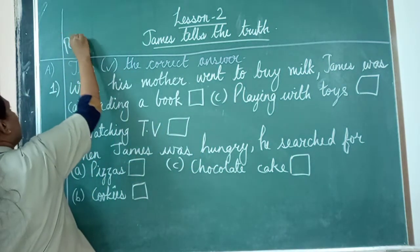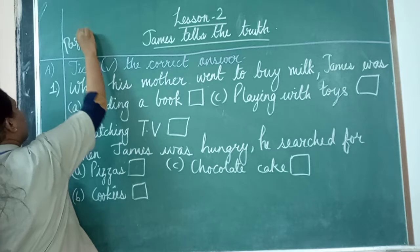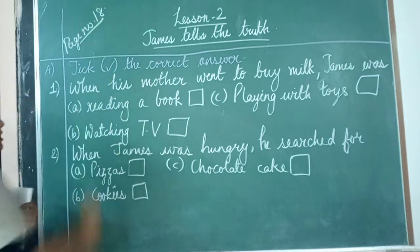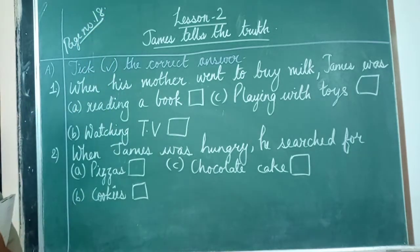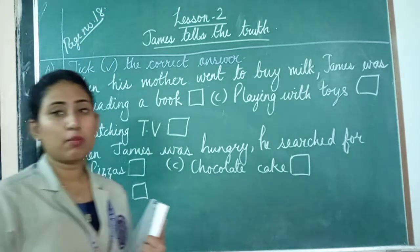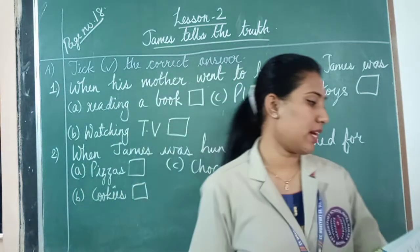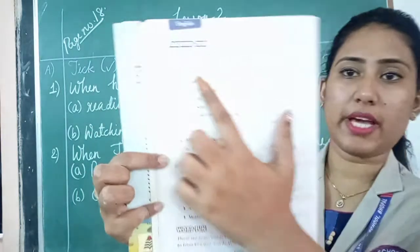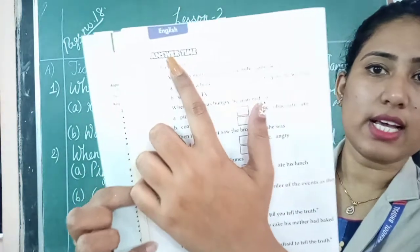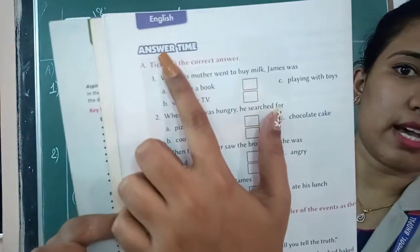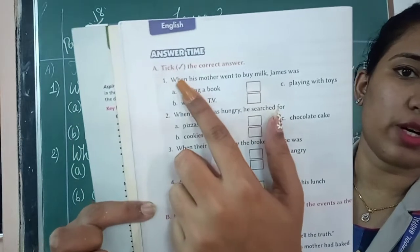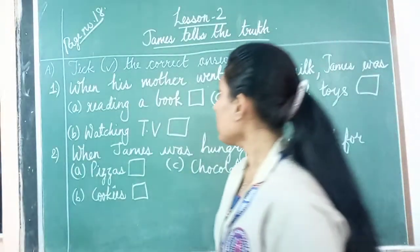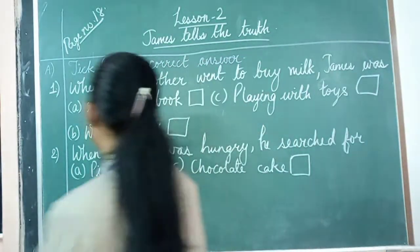Page number 18 — what are we going to do here? Answer time. See here in your book, page number 18, Answer time. In Answer time, the first question we are going to do is: tick the correct answer.